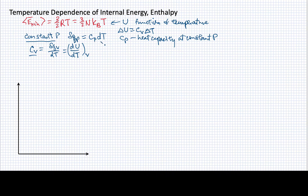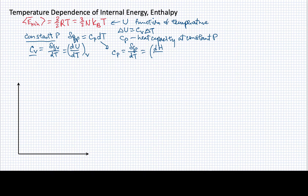Because of this relationship, we can similarly write that the heat capacity at constant pressure will be the incremental heat change at constant pressure divided by the differential of temperature. And because of its relationship with dH, we can write this as the differential of the enthalpy over a differential of temperature measured at constant pressure. So we have these parallels between internal energy and enthalpy, and those parallels are entirely due to tracking whether a process is taking place at constant volume or constant pressure.